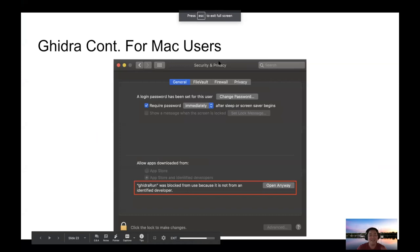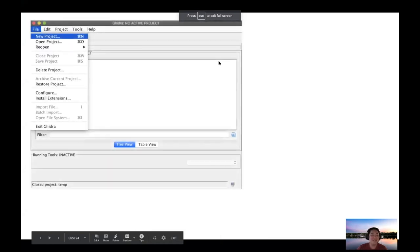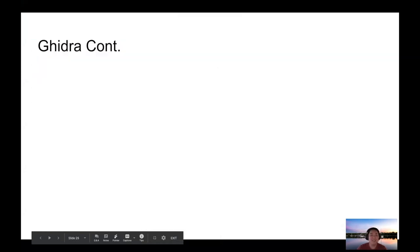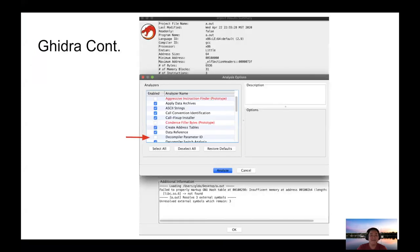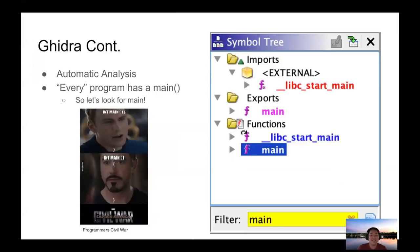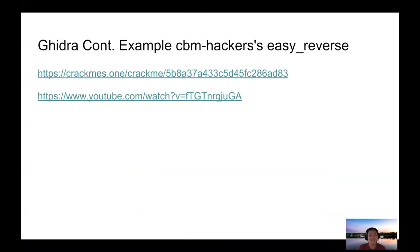All of these steps are on the slides too, so you don't have to just squash my recording. To recap: open a project, import the file, I always like to do the Decompiler Parameter ID option. Every program has a main, so search for main and start from there. From there, you can jump to different functions. Now I'm going to pass it off for the next example, which is from a crackme.